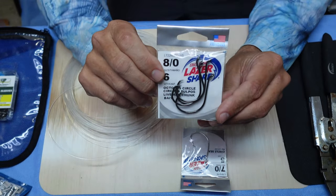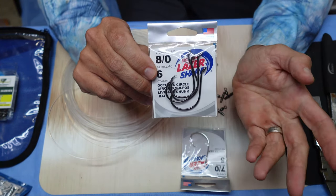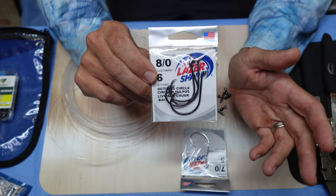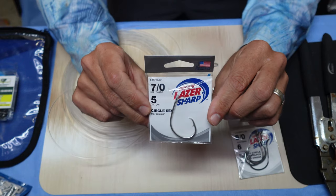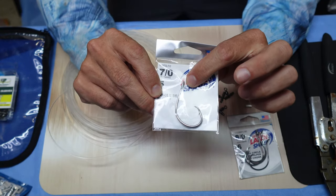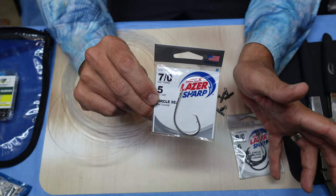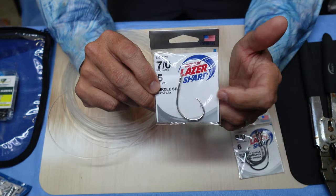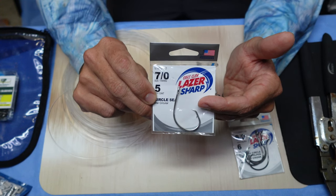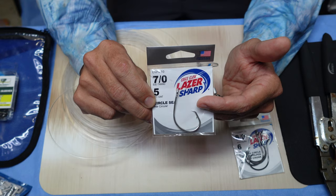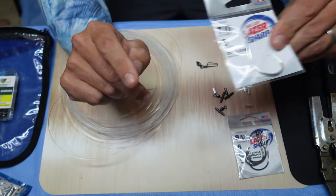For this video I'm going to be using these 8-0 laser sharp eagle claw hooks. I like these hooks, they're not very expensive and they get the job done. I also like the 7-0 eagle claw in the silver finish. I actually prefer these but for the video I'm going to be using the 8-0s in the black nickel. I just feel like the silver finish on the hook doesn't rust out as quickly and I just like it better. I like the shape of this hook a lot better. I just wasn't able to get any more.